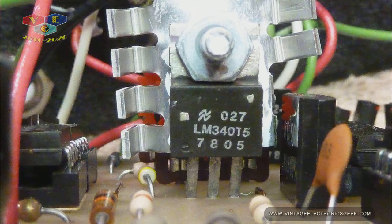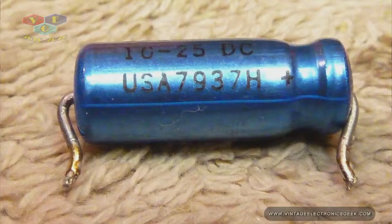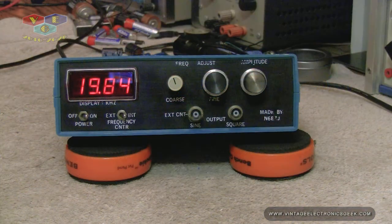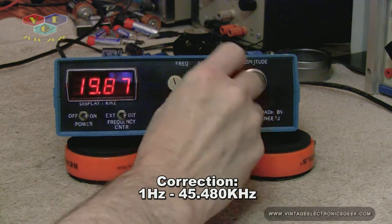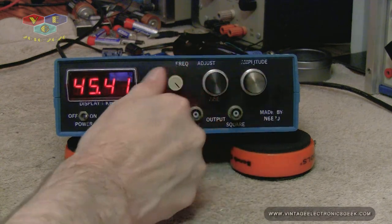This is a really cool little AF generator. It covers from about 1 Hz all the way up to 48,500 kHz.